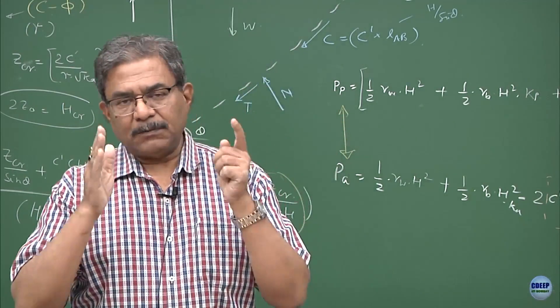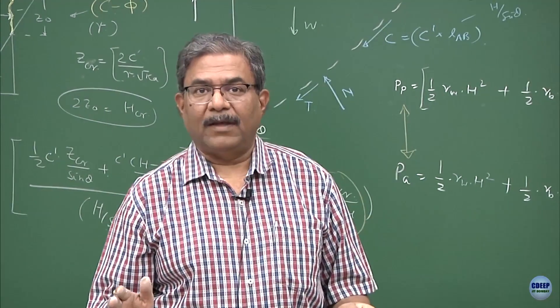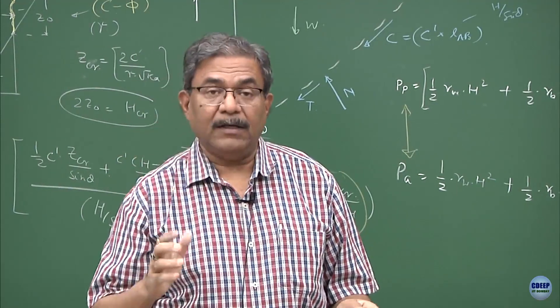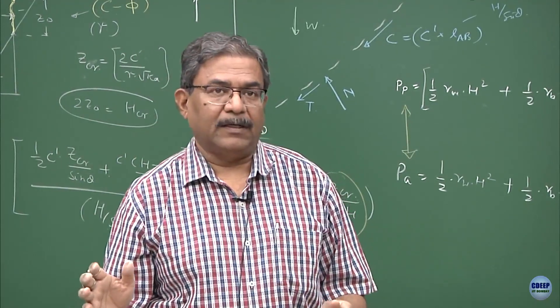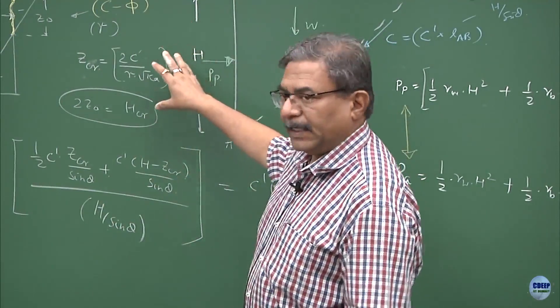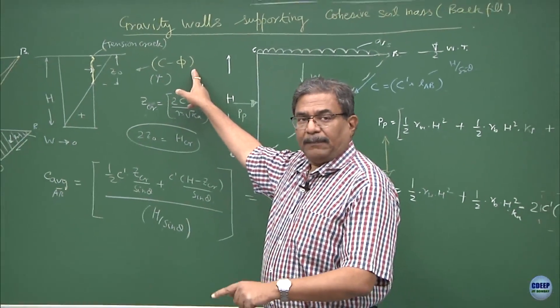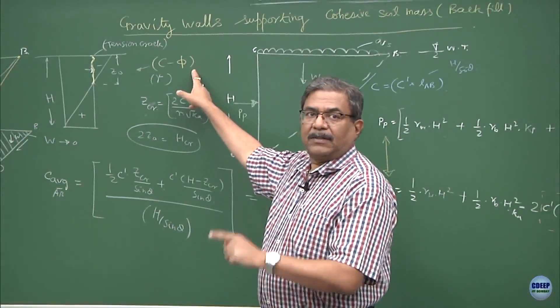A Rankine wall is a smooth vertical wall and the backfill is always horizontal, which is retaining the frictional material as a backfill material. One of the deviations we did from Rankine's earth pressure theory is that we introduced the concept of a C-phi soil keeping a vertical wall and horizontal backfill.